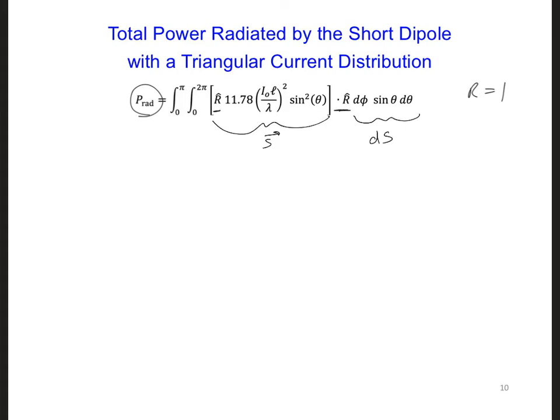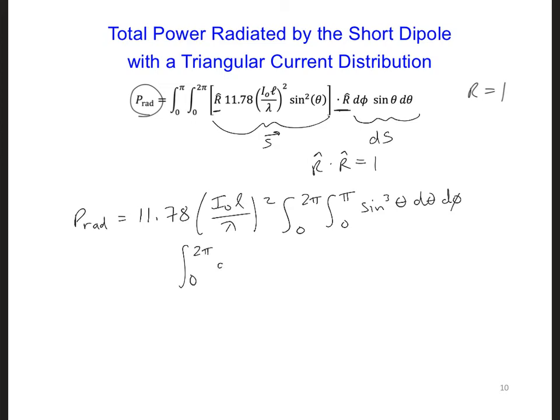Now r-hat, dotted with r-hat, is going to give us just a value of one, and then after pulling out the constants, we're going to get 11.78 I-naught l over lambda squared, and then we just integrate from 0 to 2 pi, 0 to pi, sine cubed. The 0 to 2 pi d-phi is the simpler one because that's just equal to 2 pi. For the second integral, we're going to see this in the practice problem for this lecture, so here I'm just going to give it: 0 to pi sine cubed d-theta is 4 thirds.